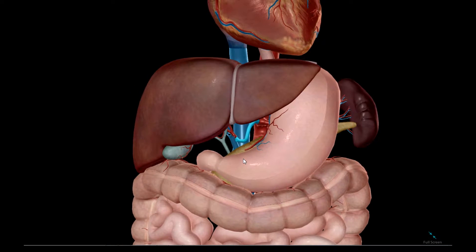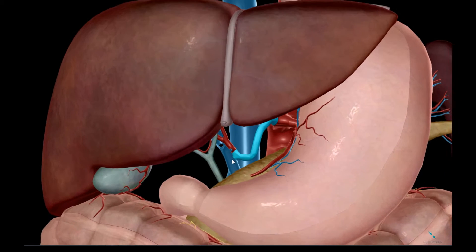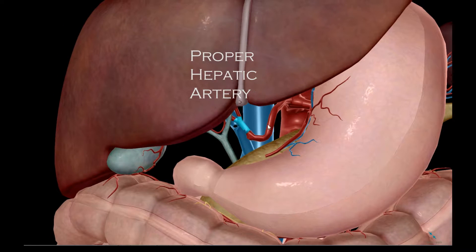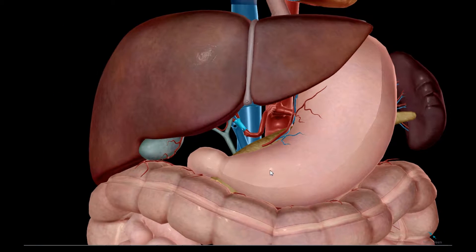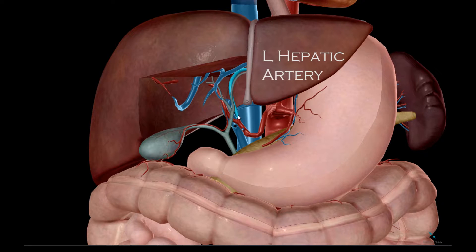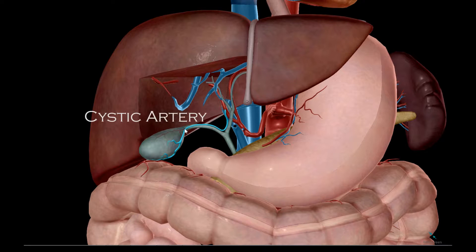The common hepatic artery gives rise to, among others, the proper hepatic artery. We dissect into the liver and see the right hepatic artery, the left hepatic artery, and the cystic artery.